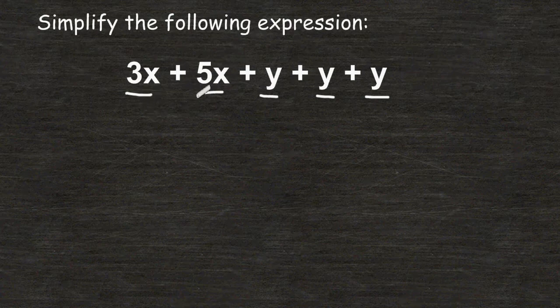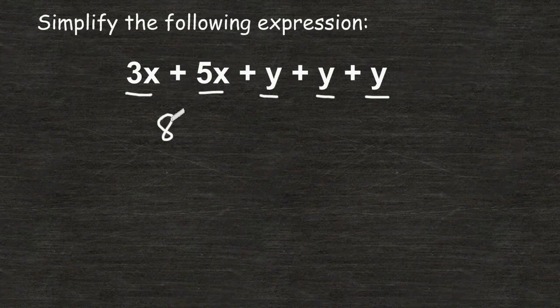So 3x and 5x both have a variable of x, so we can add their coefficients together. 3x plus 5x is equal to 8x.